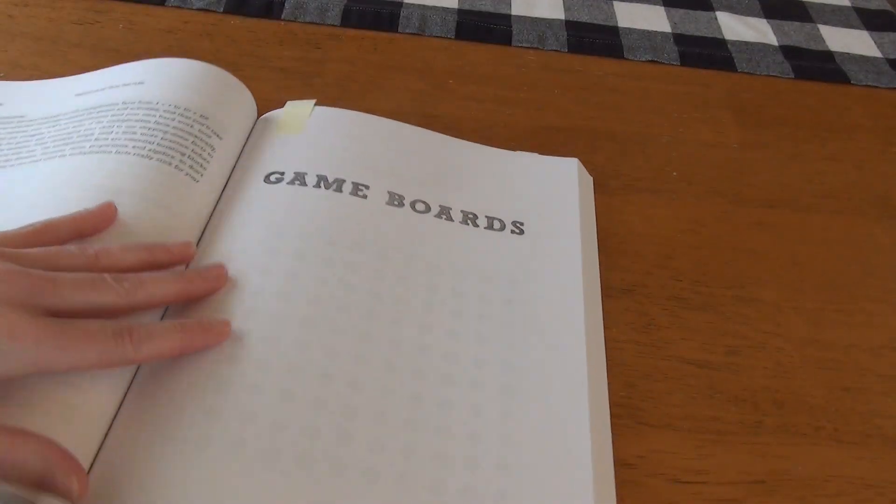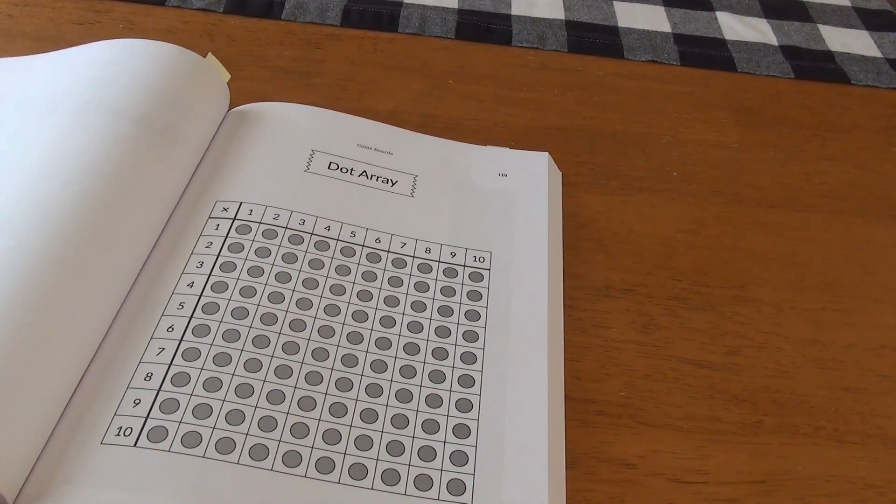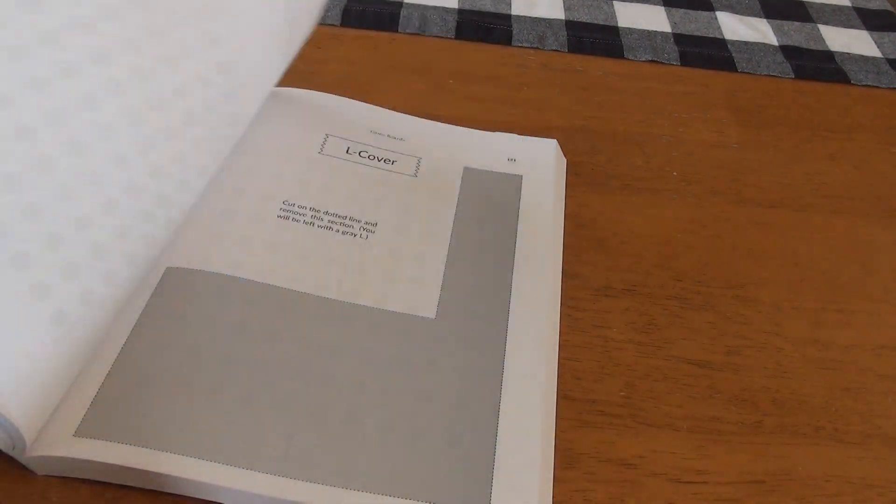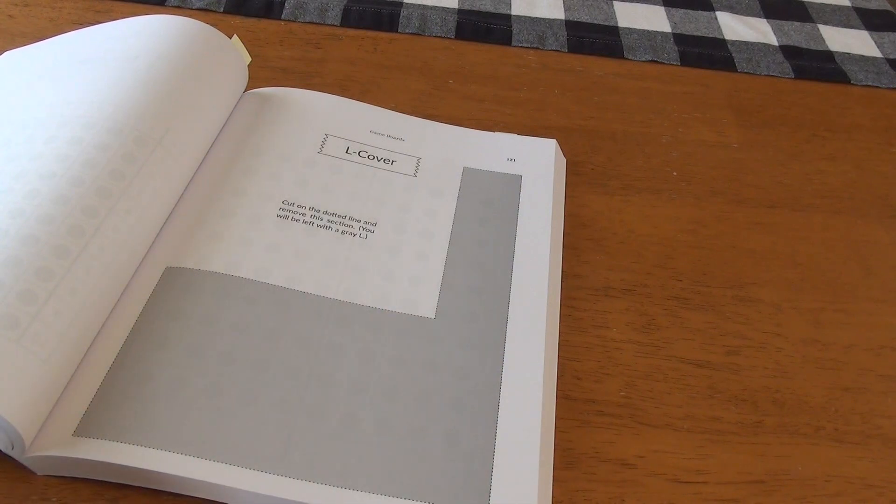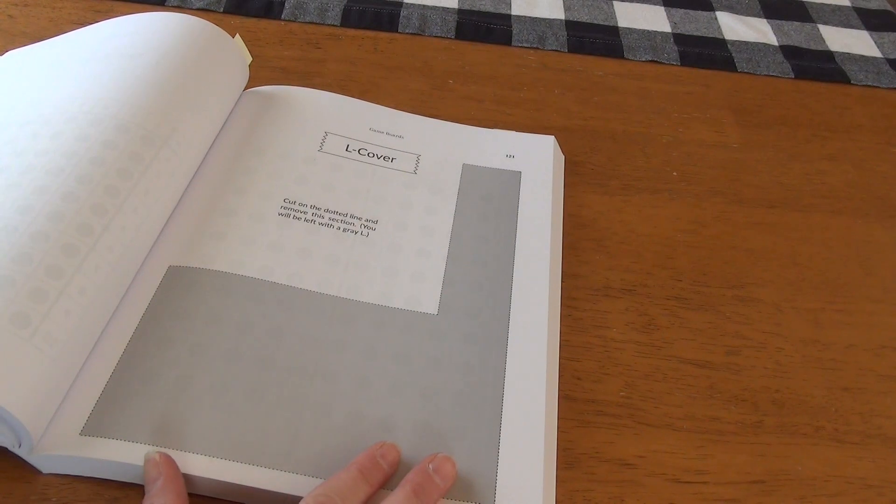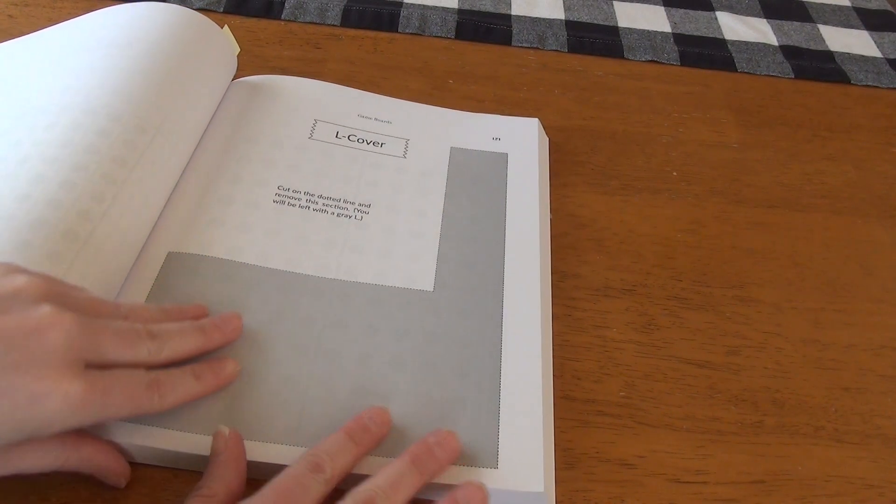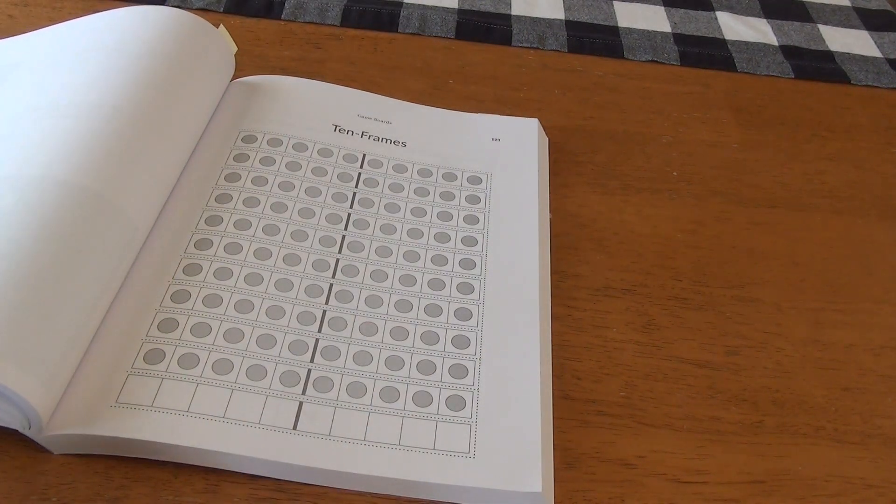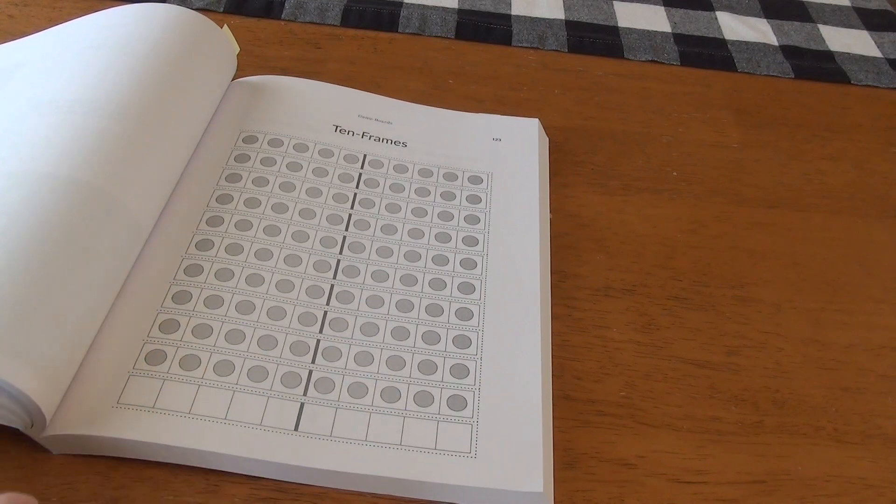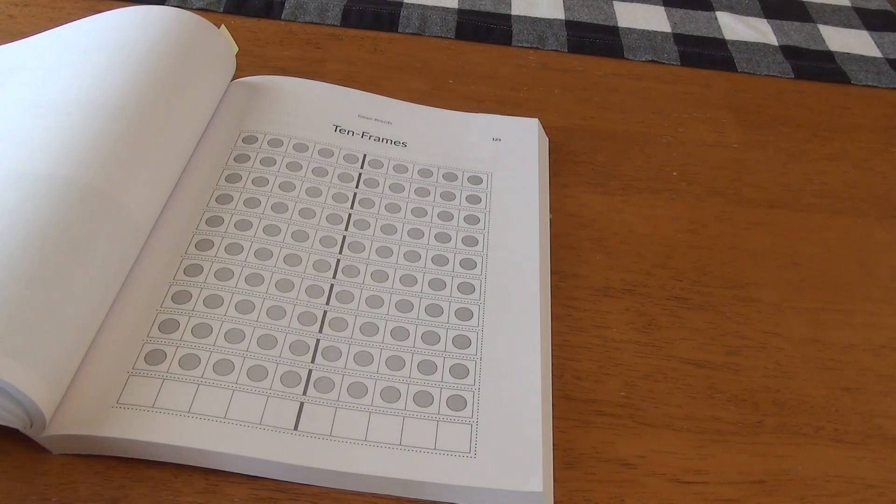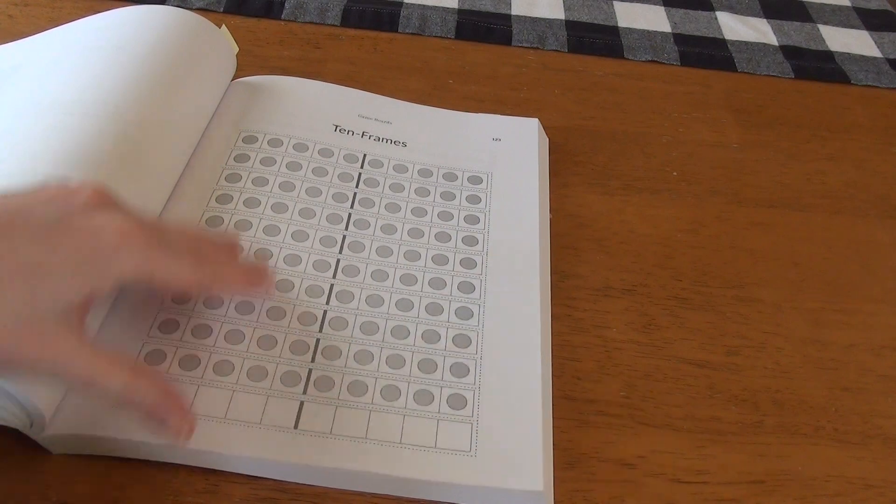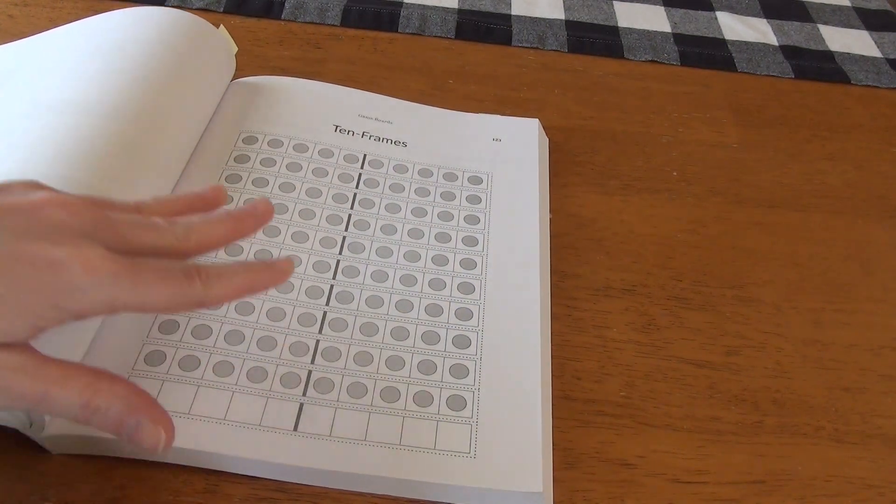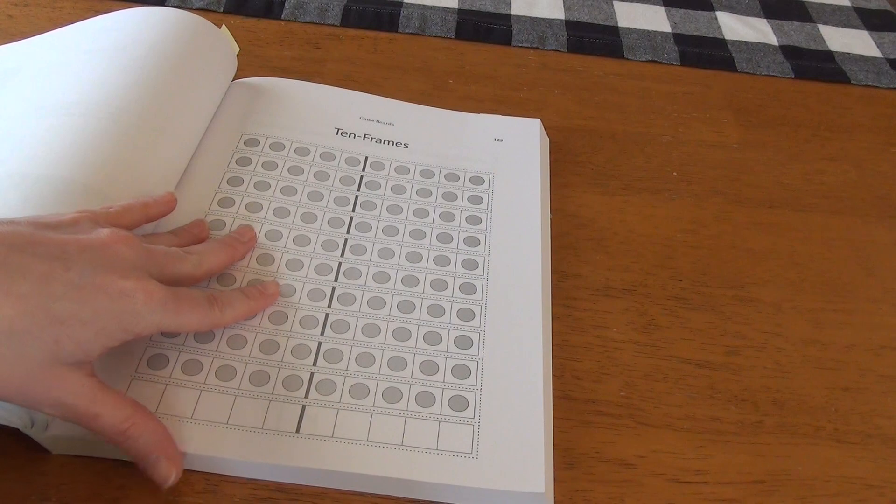So here are the game boards where we have our dot array. This is the L cover that you are going to use. Of course, if you have a laminator, probably laminating this thing would be a great idea. Because I would say this little piece of paper is going to wear out quickly. And then we have our 10 frame section. We have a blank one that was utilized in that week two lesson. And then you have all of the filled in 10 frames there.